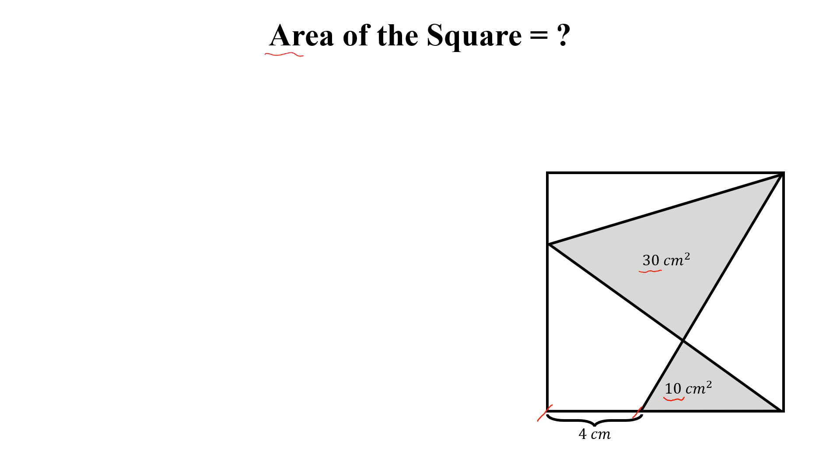How can we solve this? Let the height of this square be h. Then this length will be h minus 4, this length will be also h, and this will be also h.